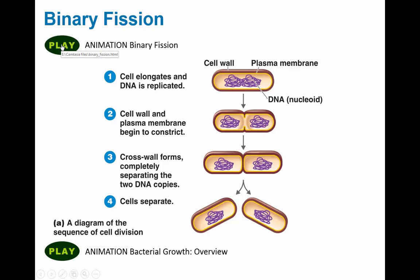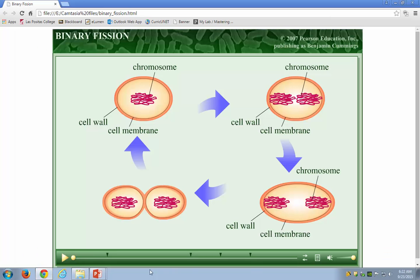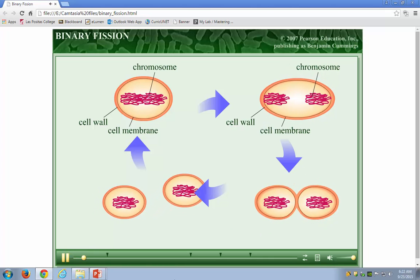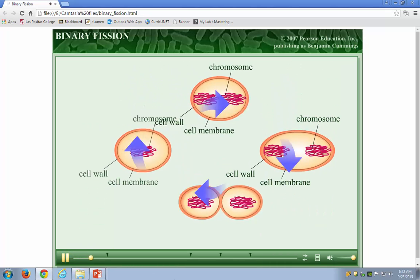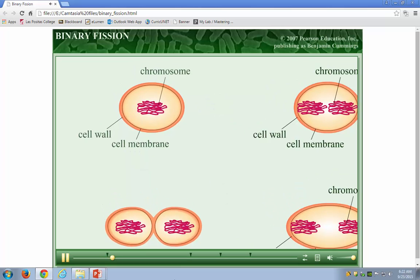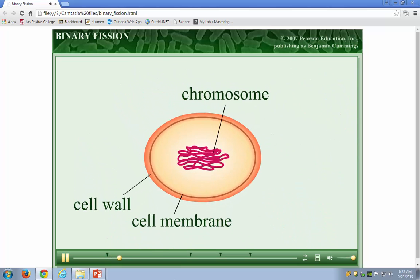Let me show you an animation of this. Most bacteria reproduce by a process called binary fission. During binary fission, the parental cell divides to form two daughter cells. In the first step, the bacterium replicates or copies its chromosome and attaches each identical copy to a separate location on the cell membrane.